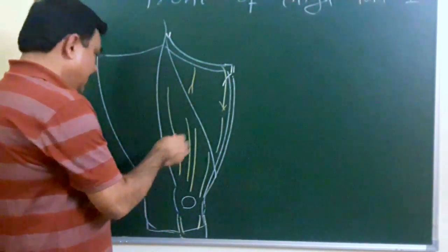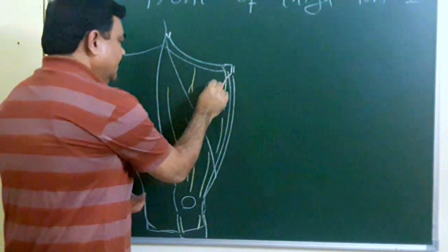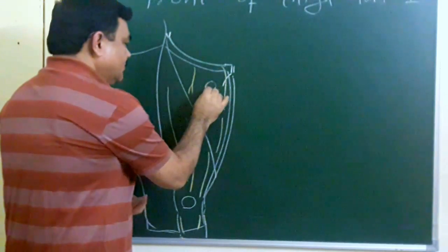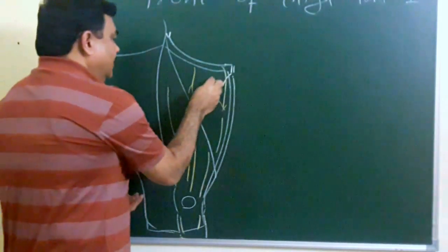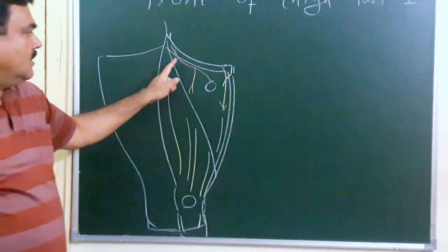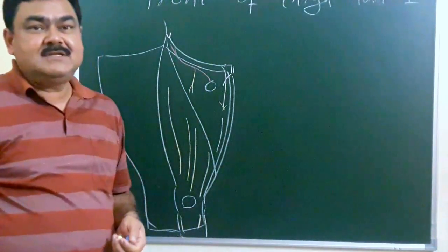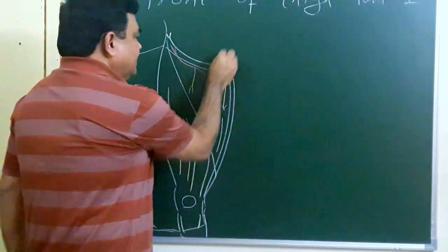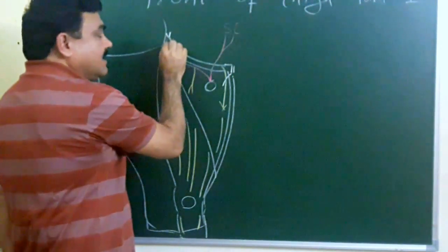Here is the position of the saphenous opening, which is present in the deep fascia. One branch of the femoral artery goes to the lateral side — this is the superficial circumflex iliac artery. There is also the superficial epigastric artery and the superficial circumflex iliac artery.